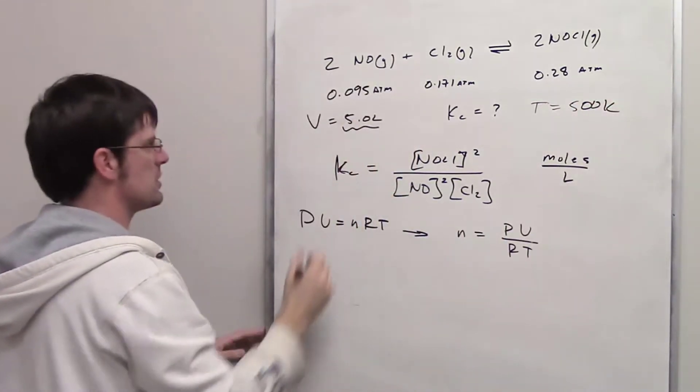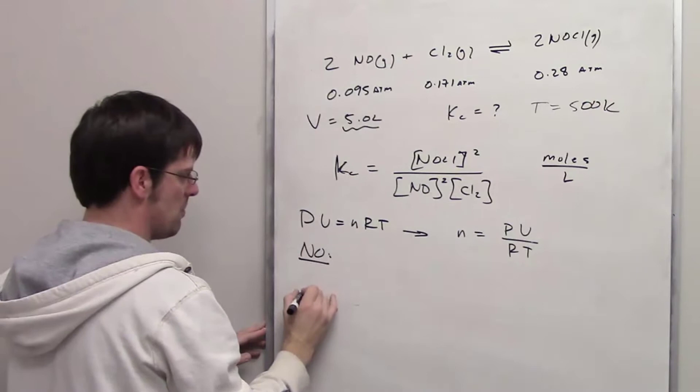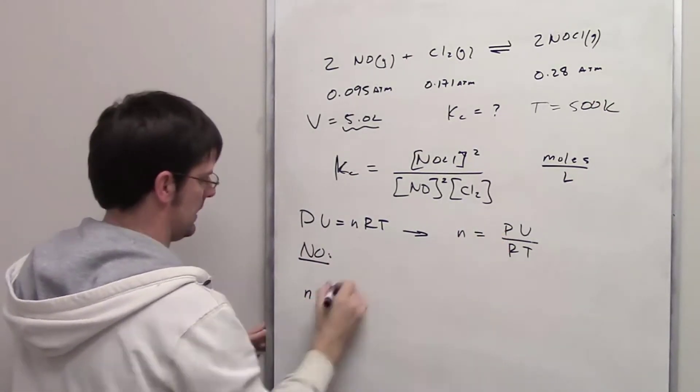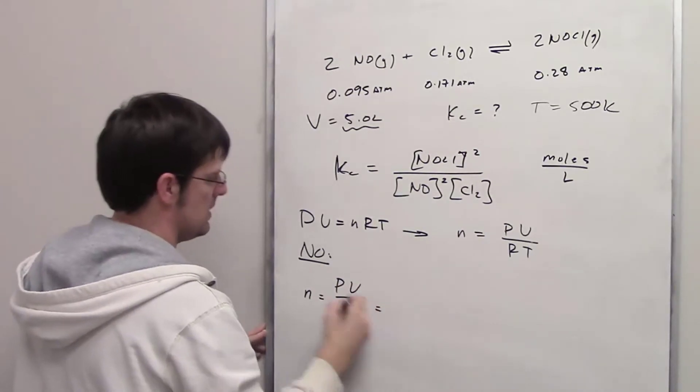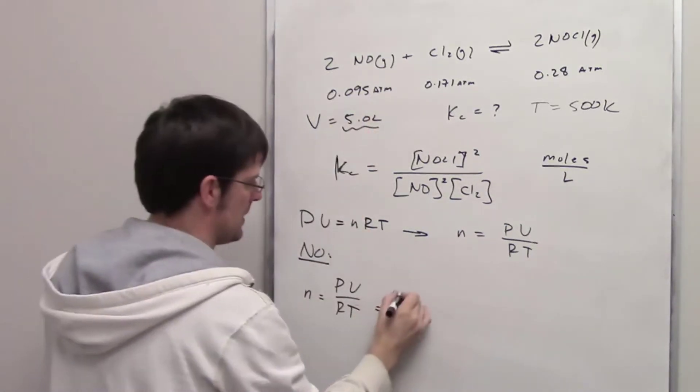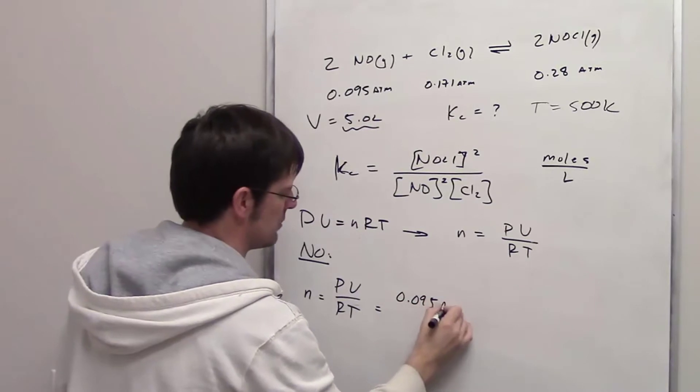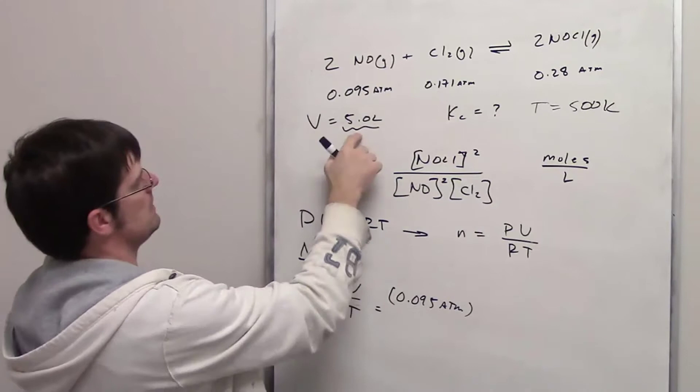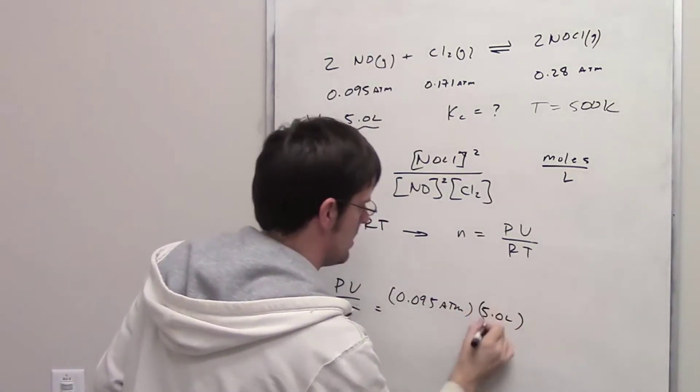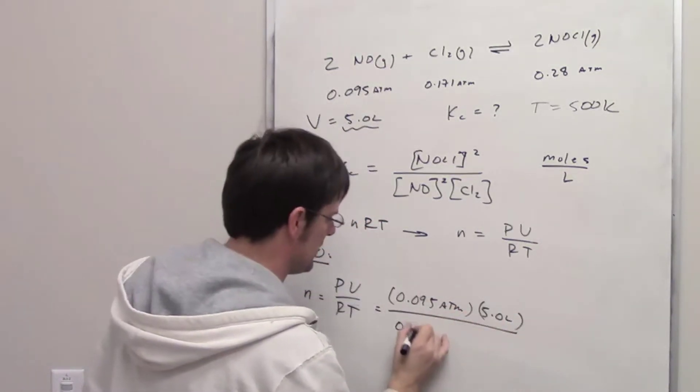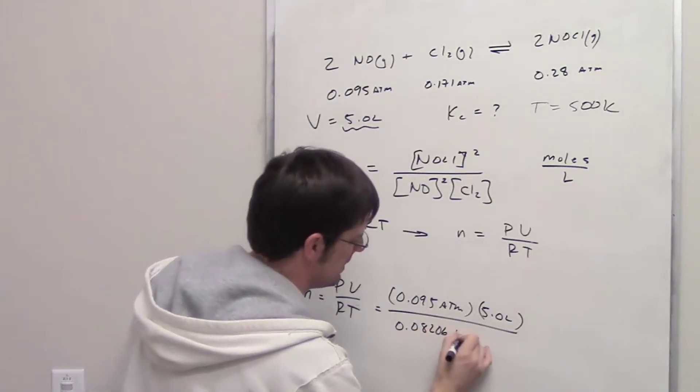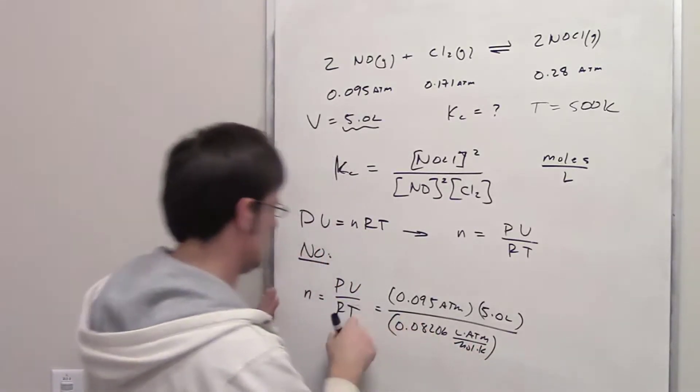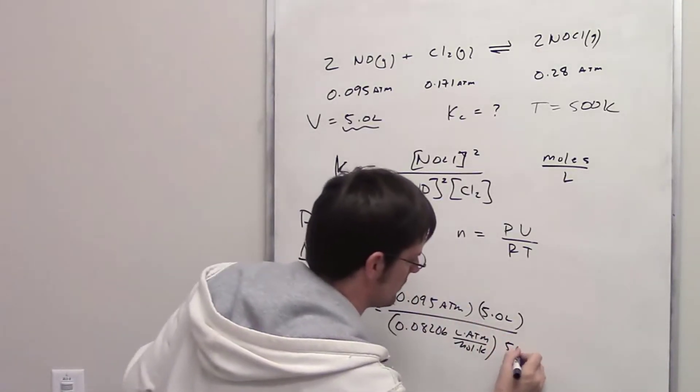Let's go ahead and do that for the first gas, NO. So NO, the number of moles of NO is going to equal PV divided by RT. Its pressure is 0.095 atm. Its volume, of course, and the volume for all of these is going to be 5 liters. R is going to be equal to 0.08206 liter atm per mole Kelvin. And then temperature is 500 Kelvin. So I'll go ahead and write that there.